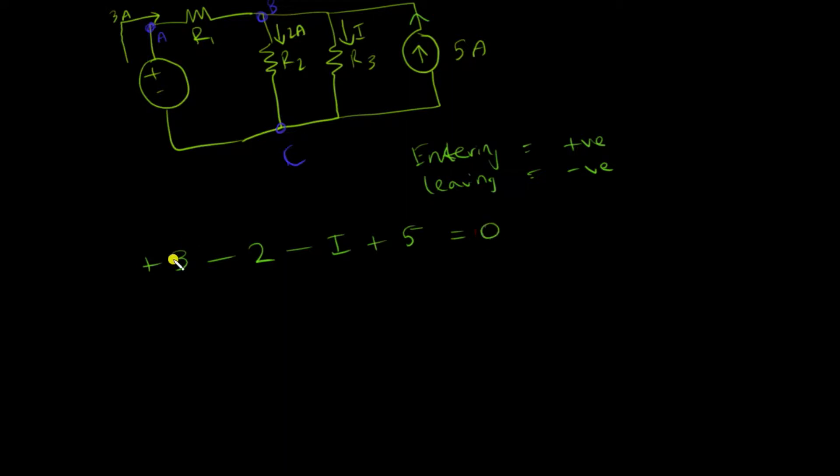This is always equal to zero and then I can use algebra to find I which is six amps. This is how you can use the algebraic sum to find the current in a circuit using KCL.